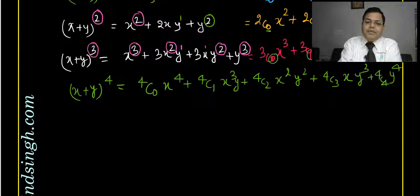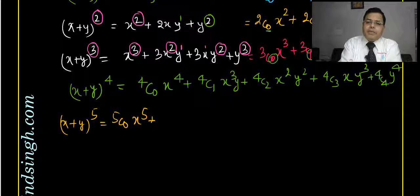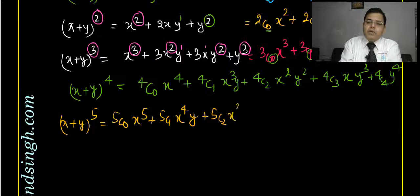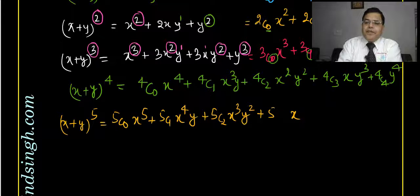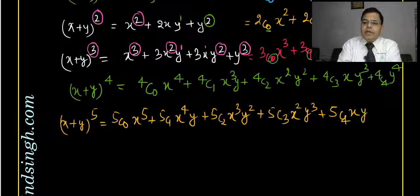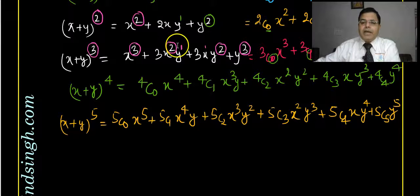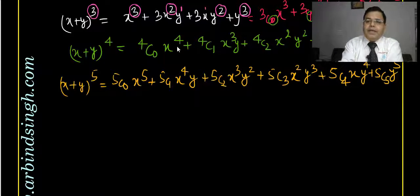For further clarification, if x plus y to the power 5, you can write 5C0 x to the power 5 plus 5C1 x to the power 4 y plus 5C2 x cubed y squared and so on up to 5C5 y to the power 5. Similarly, for any power n, we can write the expansion. So whenever there is a power n, we write the general expansion.